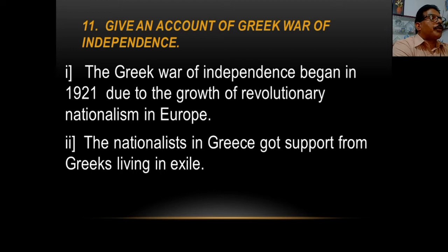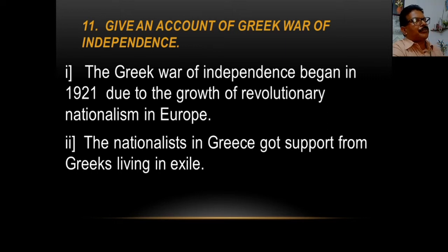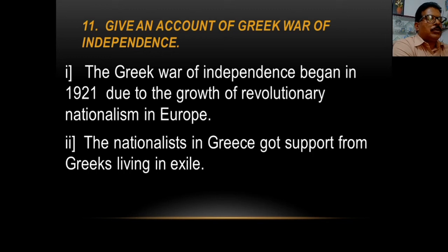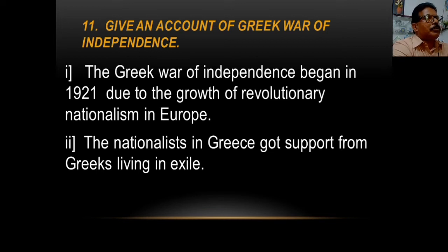Give an account of the Greek War of Independence. The Greek War of Independence began in 1821 due to the growth of revolutionary nationalism in Europe. The freedom struggle of Greece began in 1821. The nationalists in Greece got support from Greeks living in exile — those who had been banished from their country and were living in other countries — and they supported the nationalists in Greece.